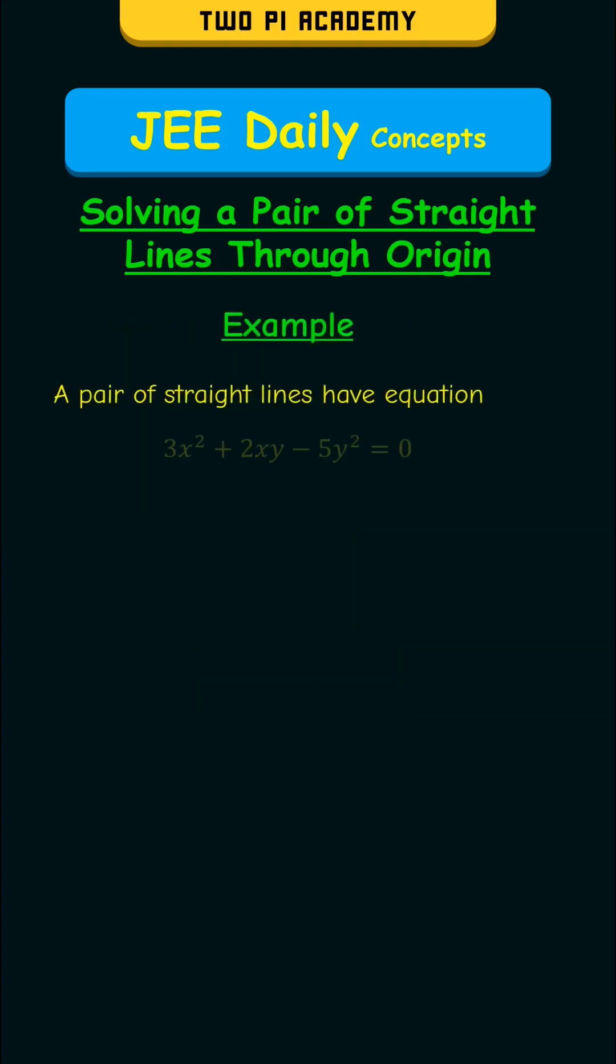A pair of straight lines have equation 3x² + 2xy - 5y² = 0. Find the individual lines present in it.